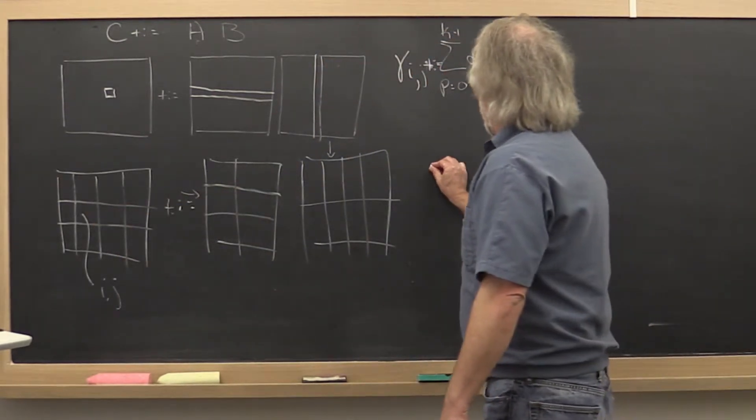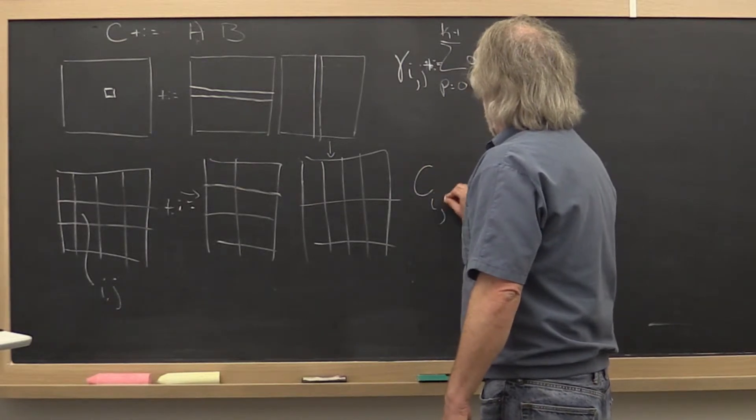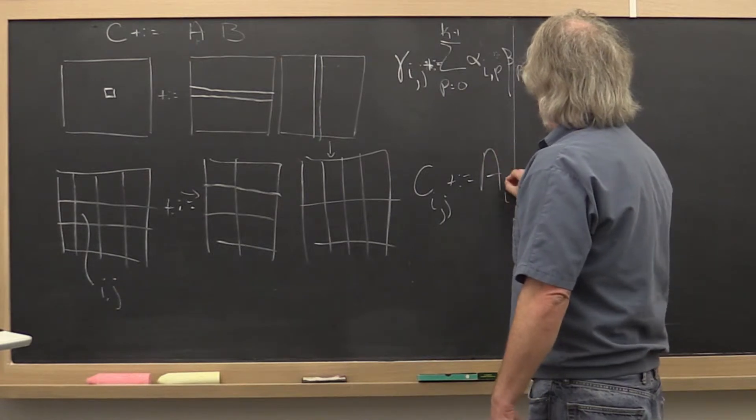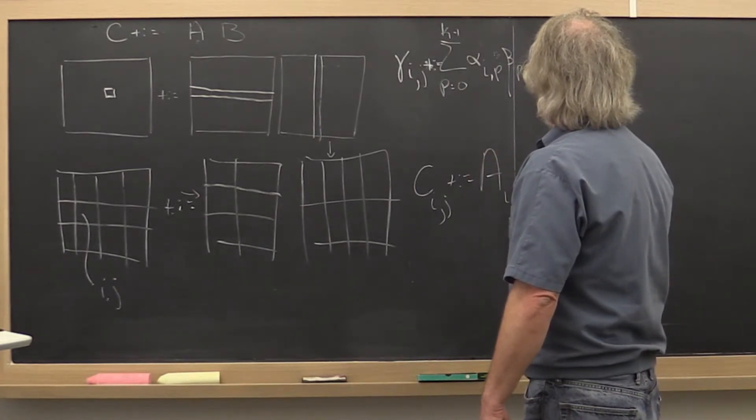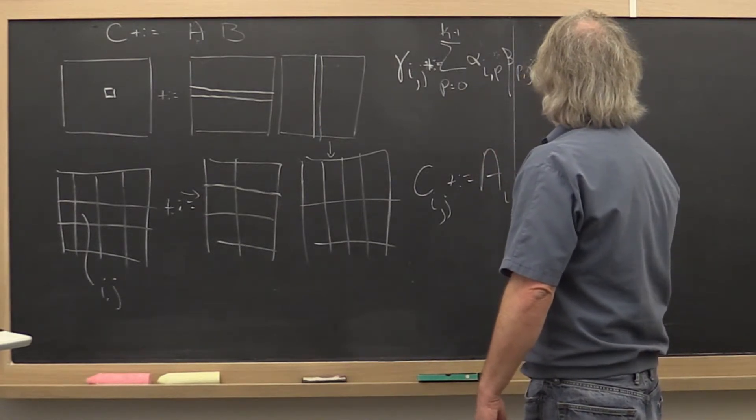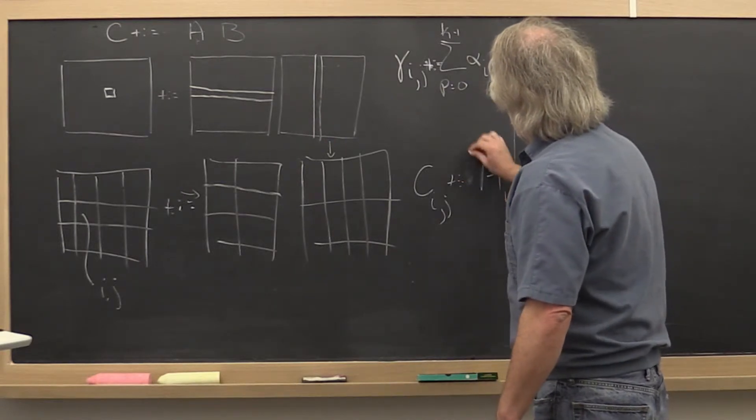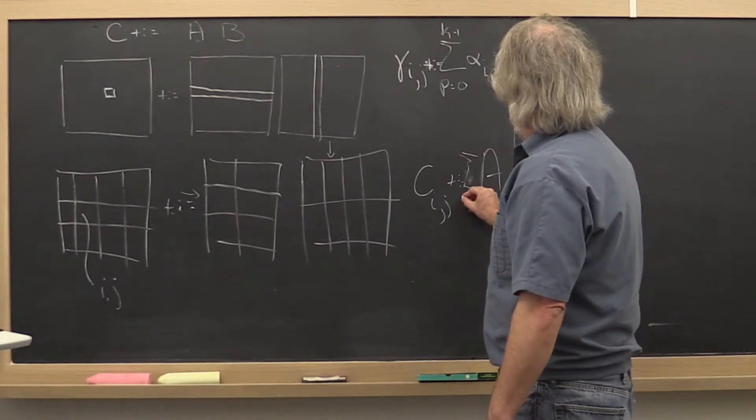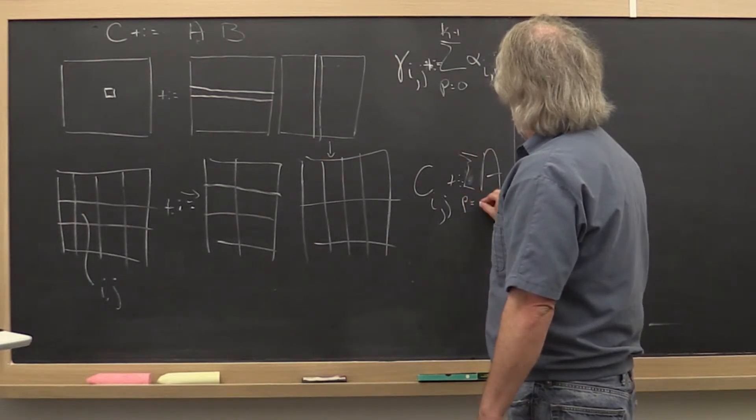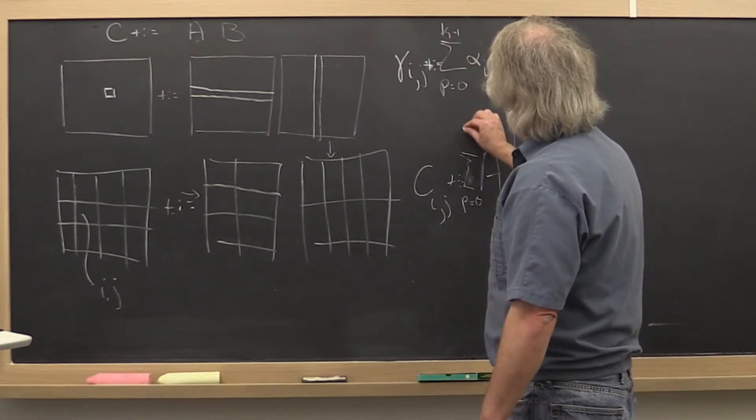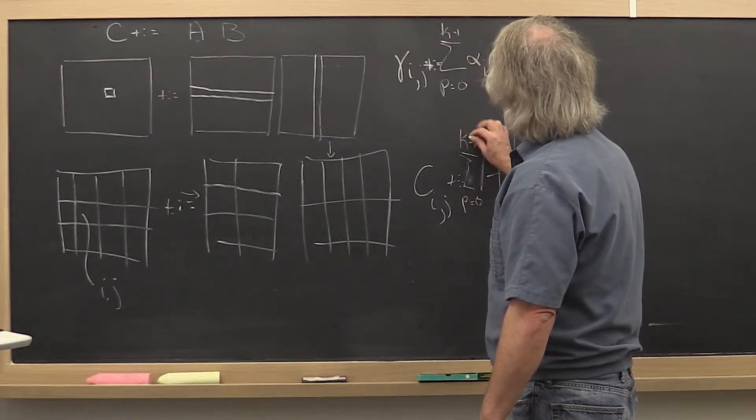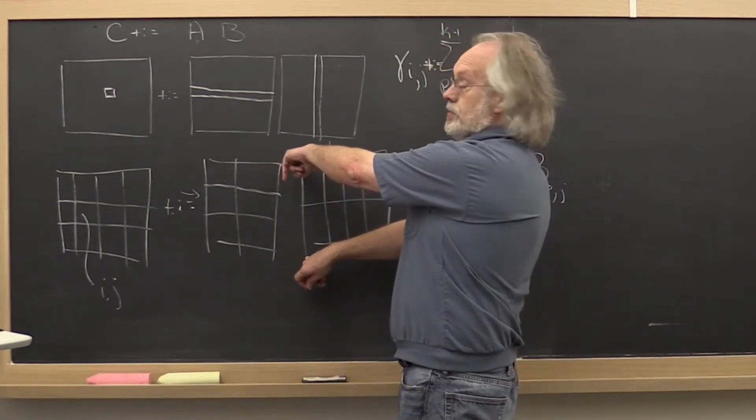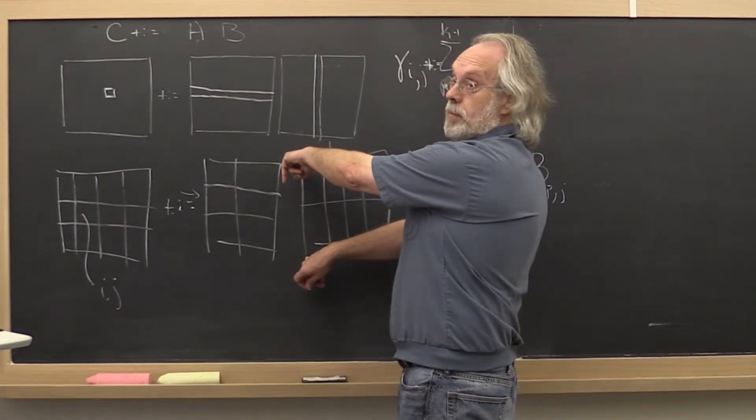And therefore the formula becomes that the ij block is updated by the ip block times the pj block, all summed from p equals 0 to k minus 1, where we make this a capital K because the number of blocks in this direction we're going to take to be capital K.